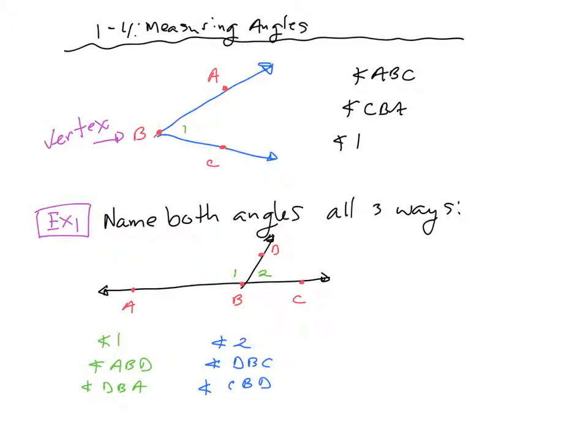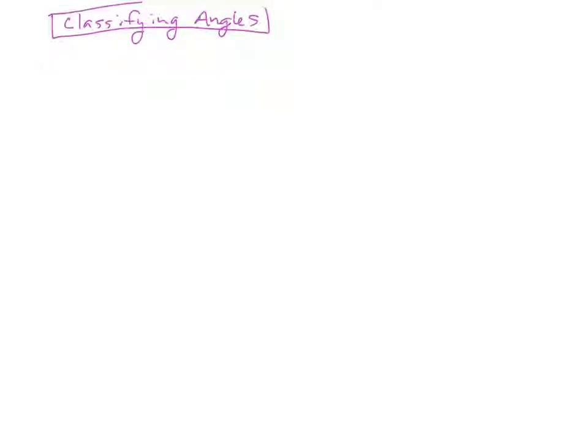So let's do a little review on how to classify an angle. This should be a review from middle school. There are four ways that we can classify an angle. I can have an angle that looks like this, or I can have an angle that looks like this. What's the difference between these two angles — what is that angle called versus this one?